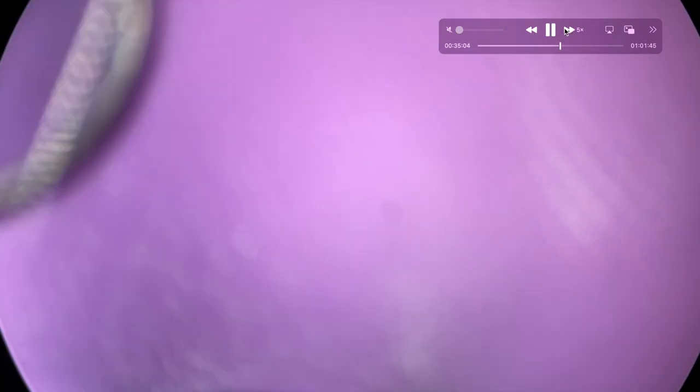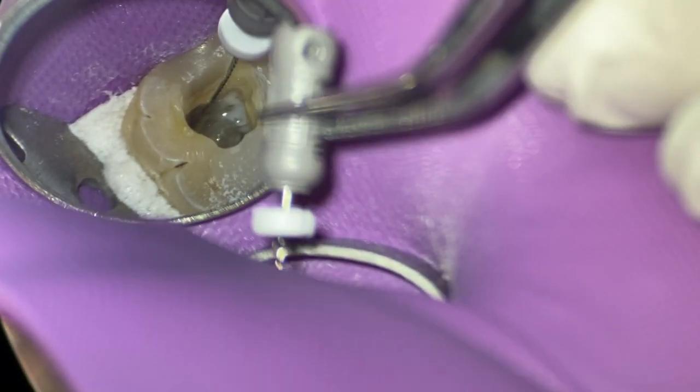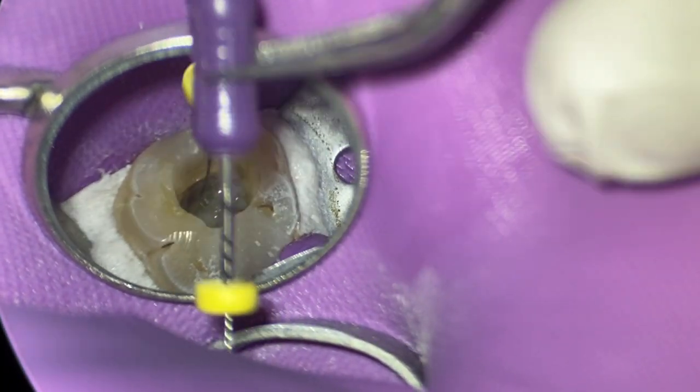What are we going to use next? We're going to use a six file. Place it in there. We're going to watch wind that down. Watch wind, pull. Watch wind, pull. So I'm just going to go through a regular six, eight, ten progression. From here on, I was very fortunate because it's actually a straight canal. The working length was really short.